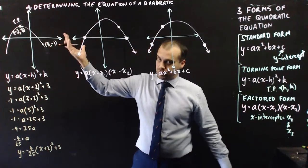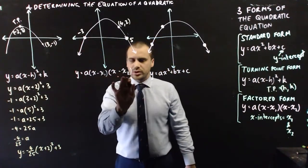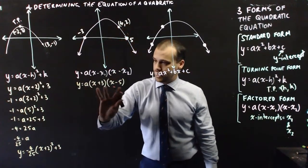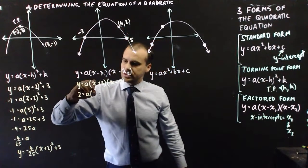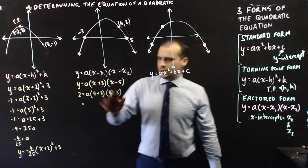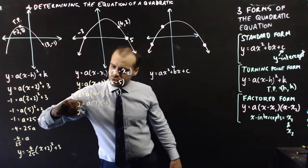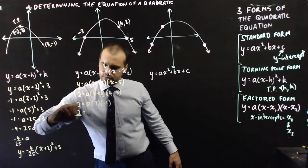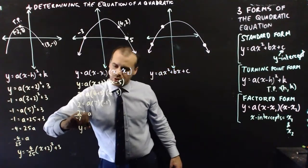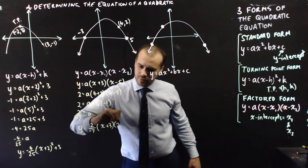That's how to do it if you know the turning point and a random point. For the factored form example — if the two roots were negative 3 and 5, I sub them in, making sure to swap the signs. With the random point x equals 4, y equals 2, I sub those in as well. Note you're subbing x in twice: 4 plus 3 and 4 minus 5. Working through this gives 7 times a times negative 1 equals 2, so a equals 2 over negative 7. Now we know the full equation: y equals 2 over negative 7 times (x plus 3)(x minus 5).